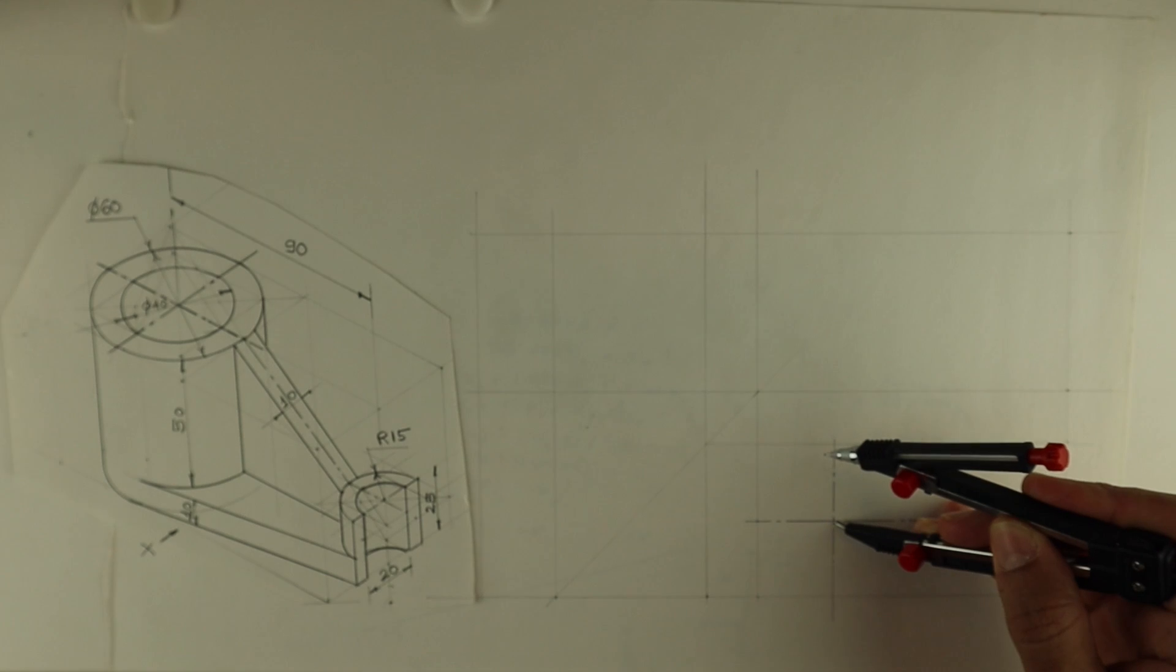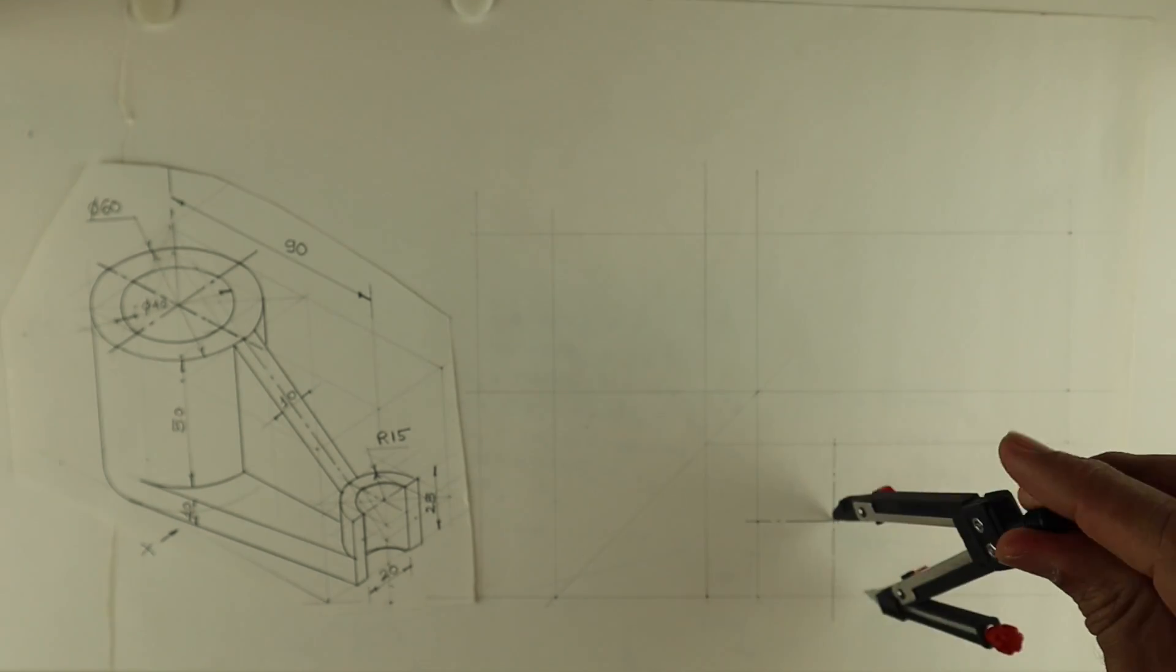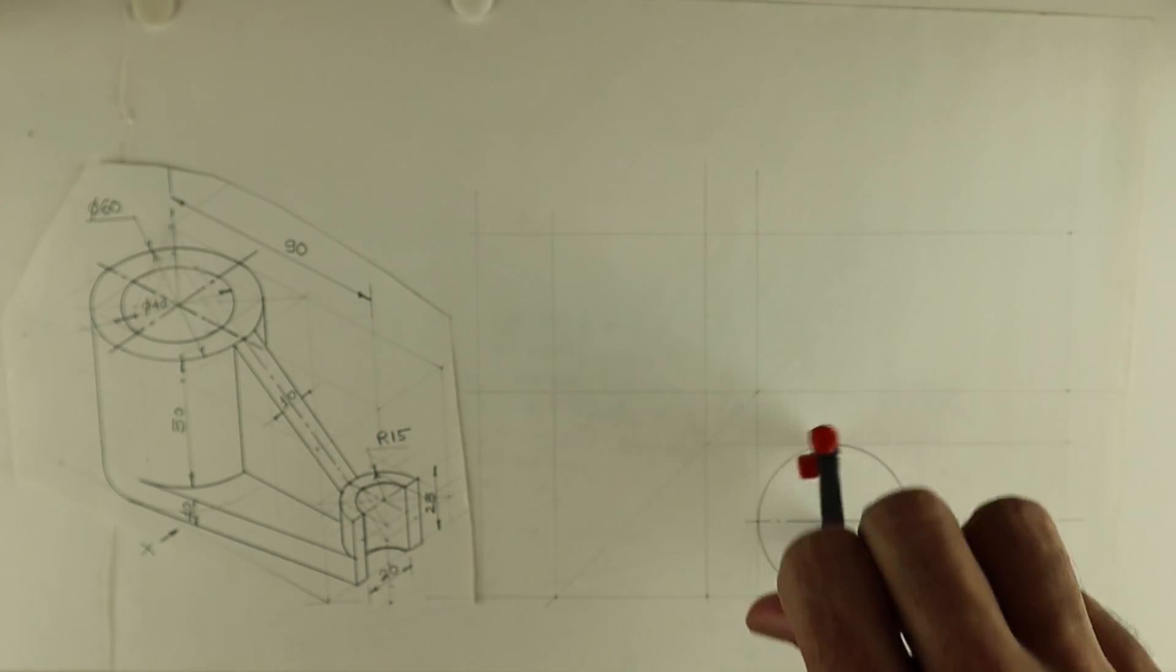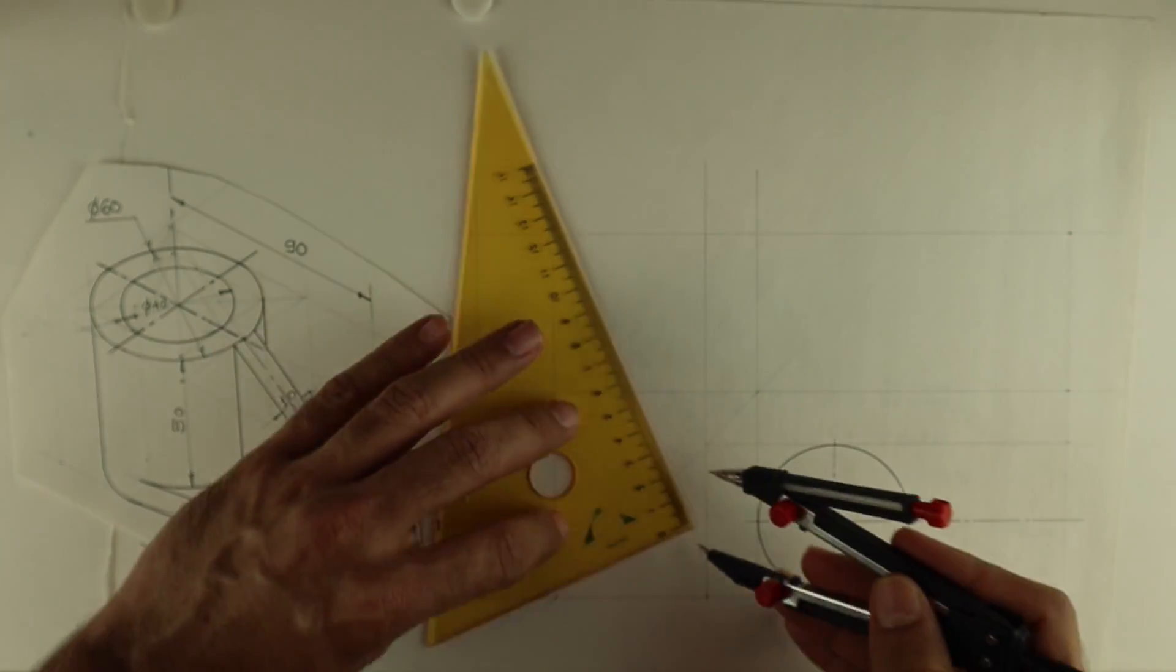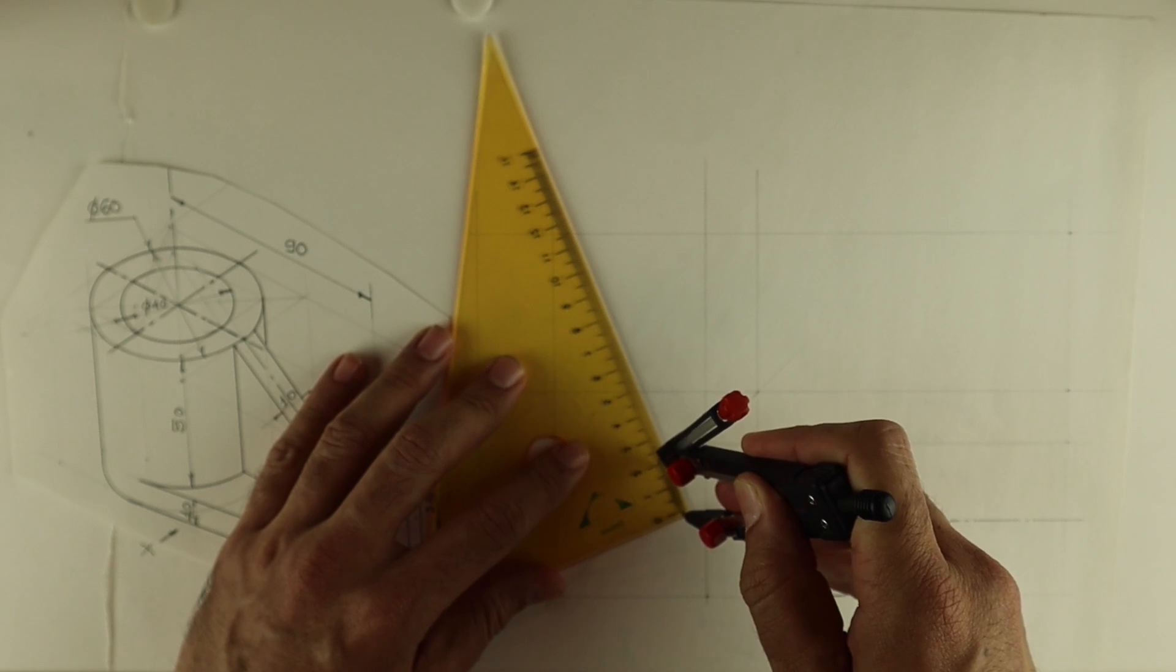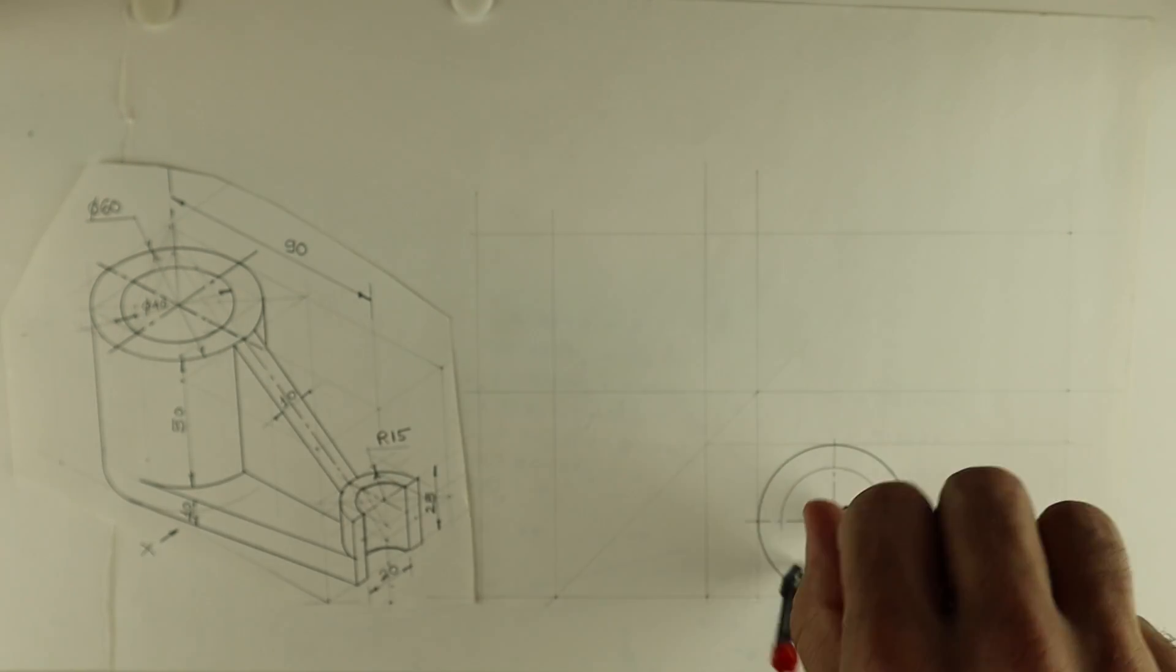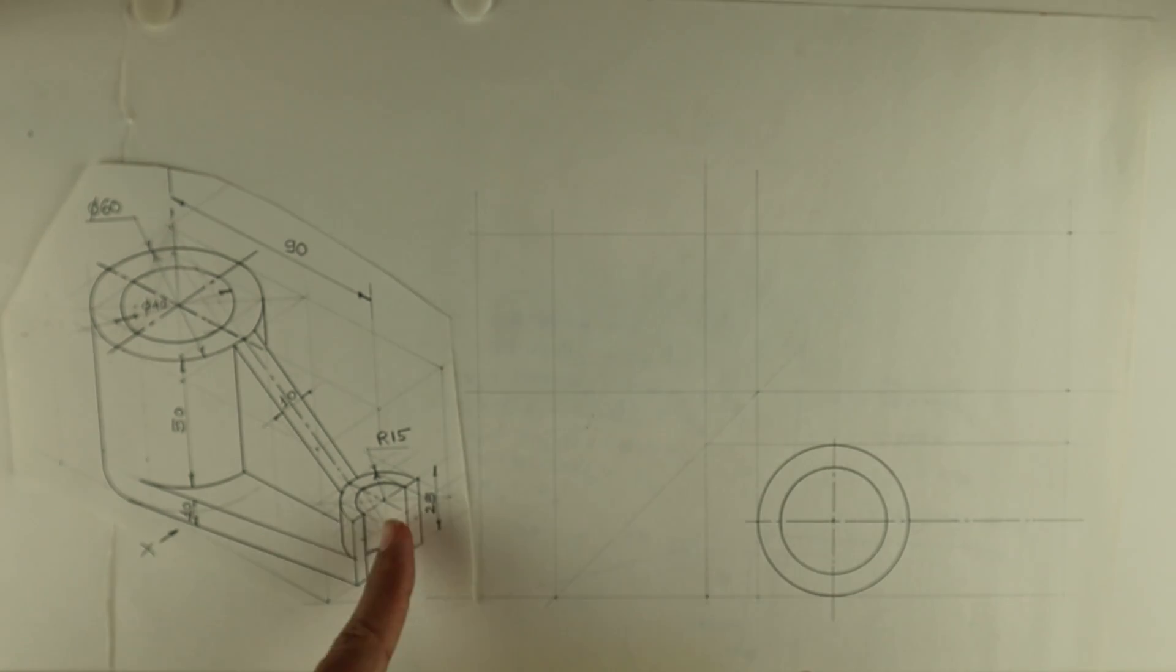Then from this point, take this radius and draw a circle. This is radius 30, then you take radius 20.